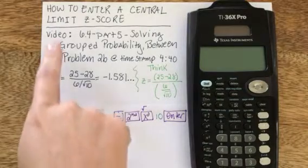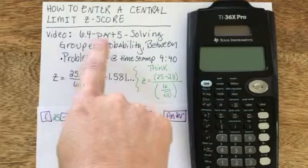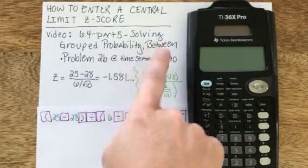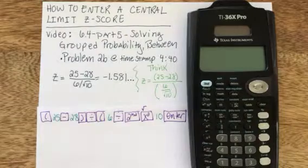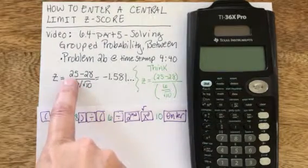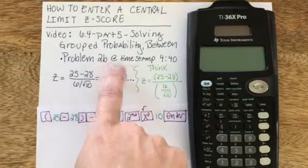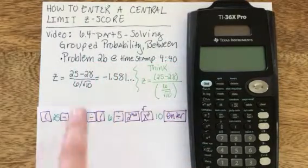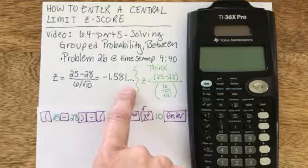I took this specific problem from my video titled 6.4, part 5: solving group probability between, because it was a probability of a group average for 10 people being between 25 and another value. Specifically, if you look at problem 2 at timestamp 4 minutes and 40 seconds into that video, you will see this line over here on the left.